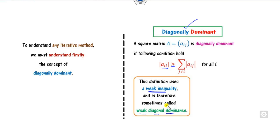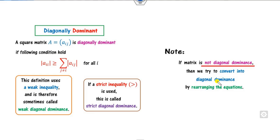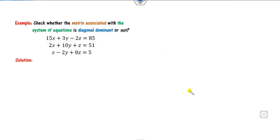On the other hand, if the condition is strictly greater than, we call it strictly diagonal dominant. In general, when we say diagonal dominant, either can be used. If the matrix is not diagonally dominant, your target is to convert it to diagonal dominant by simply rearranging the equations.